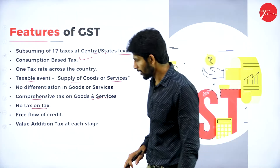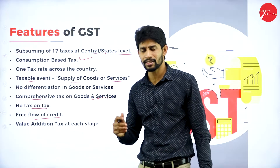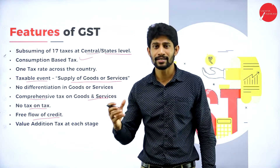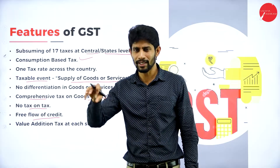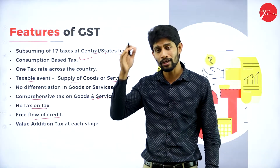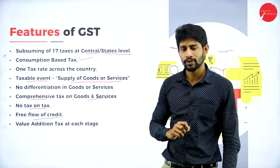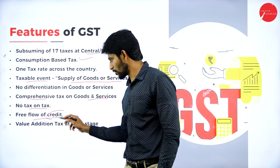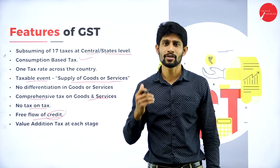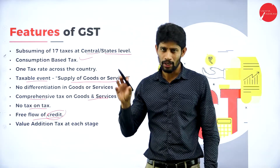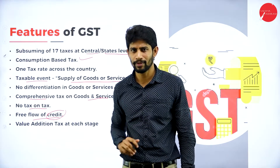Free flow of credit is another feature. If you are a manufacturer purchasing raw materials and inputs to produce a product, whatever tax you paid on raw materials will be credited in your GST account. While paying the output tax on the final product, you can take this credit advantage — the credited amount will be deducted and only the remaining balance will be collected from you.